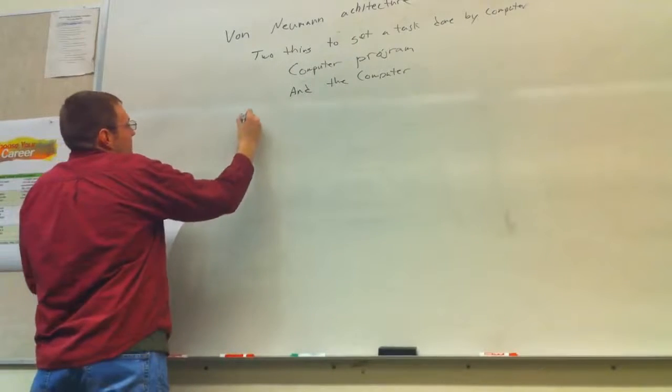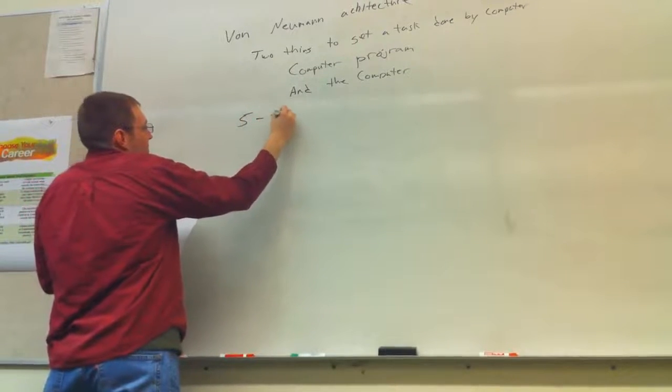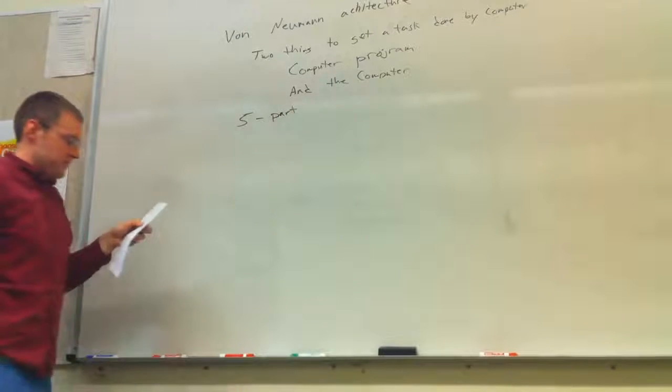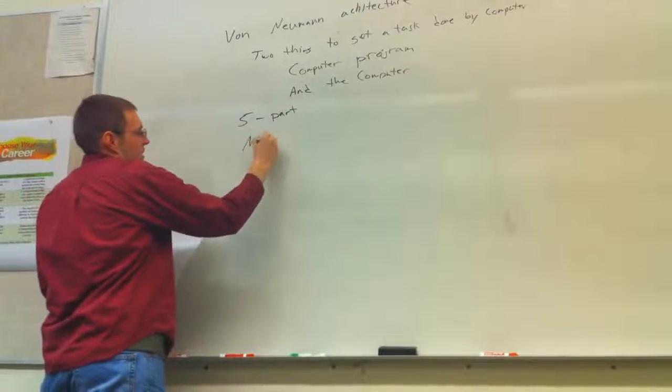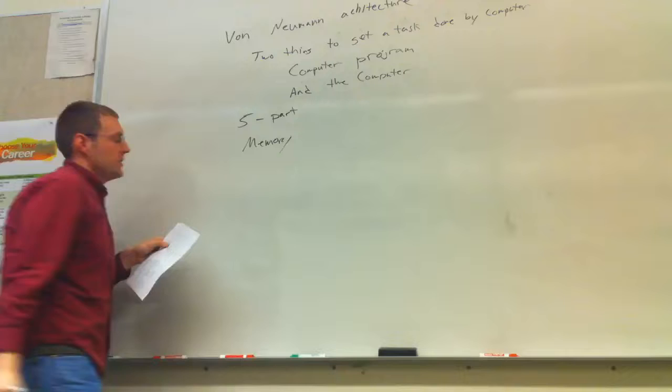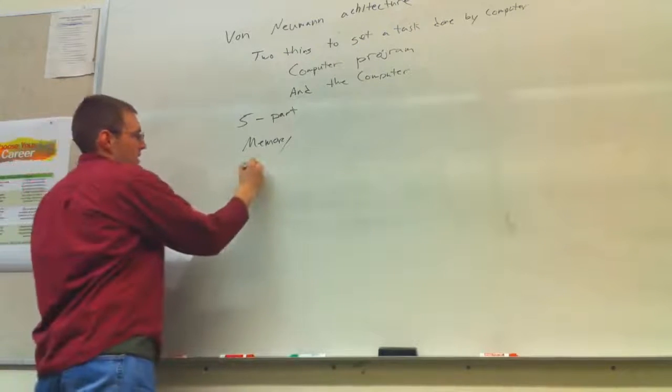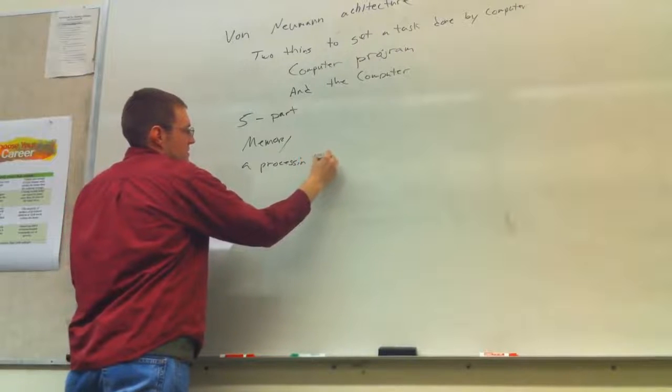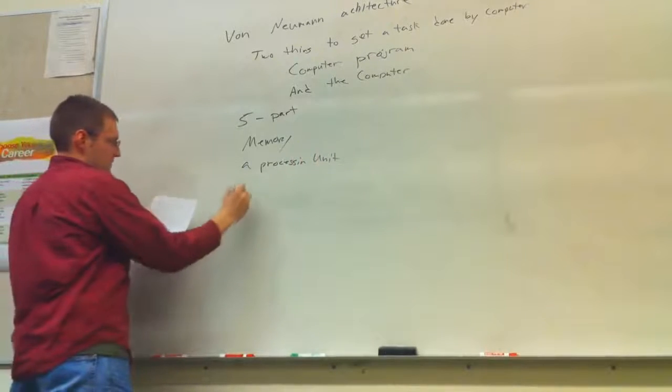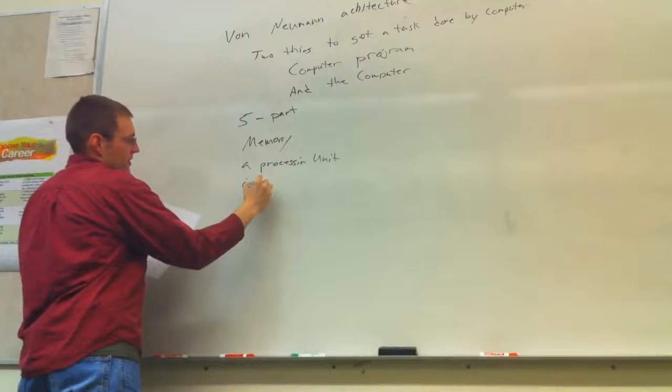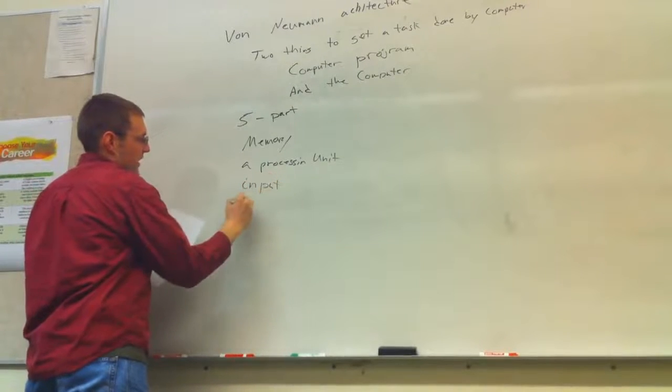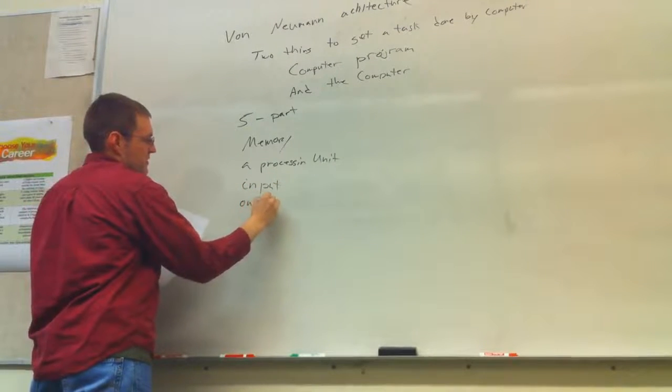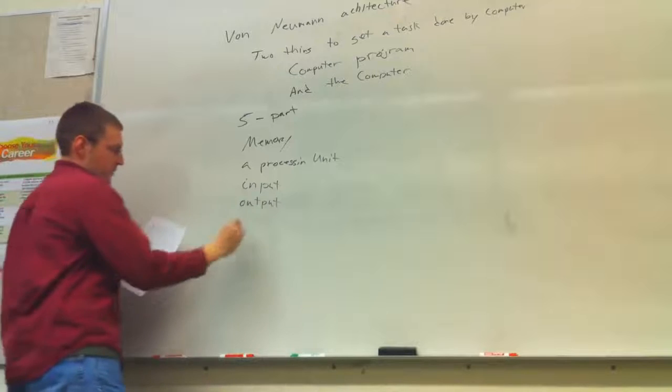So the Von Neumann is split into five parts. We have memory, a processing unit, an input, output, and a control unit.